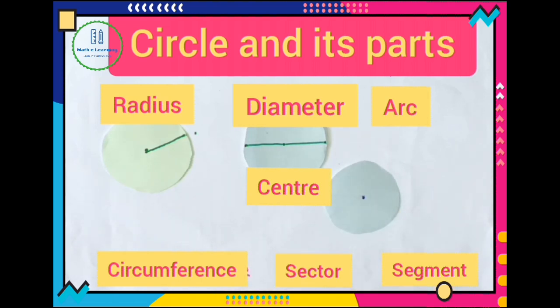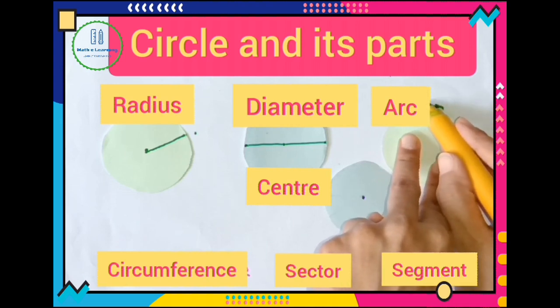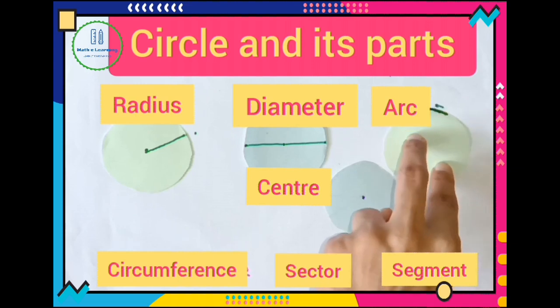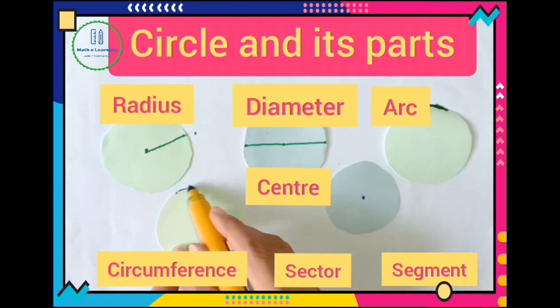Next part is arc. A particular part of the border of circle is called an arc, so this particular part is called an arc. Next part is circumference: the distance around this circle is called circumference.